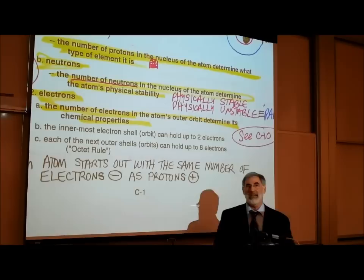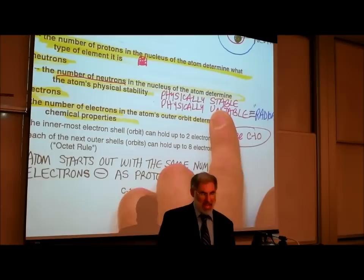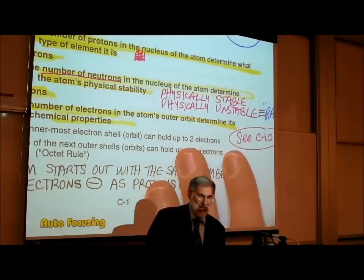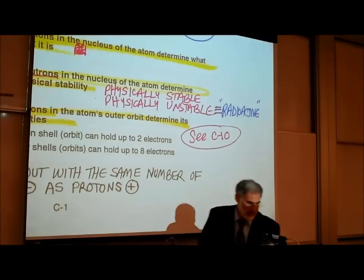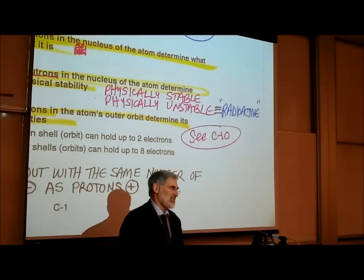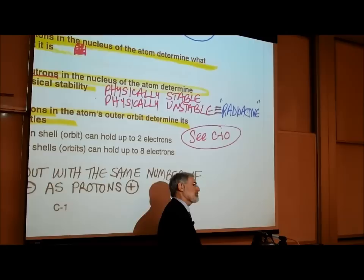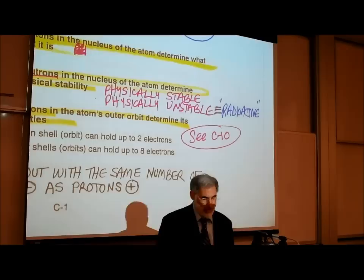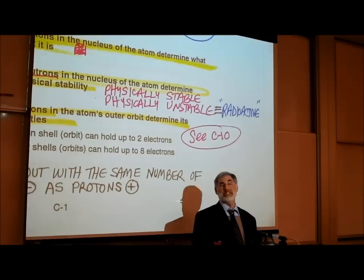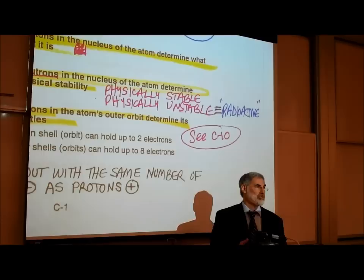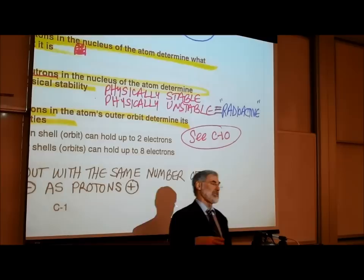Atoms are described as either being physically stable — meaning they don't change — or physically unstable. Another word for unstable is radioactive. Atoms are either stable or radioactive. What determines whether an atom is stable or radioactive is determined by the number of neutrons in the nucleus. In general, atoms with more neutrons than protons tend to be physically unstable or radioactive.